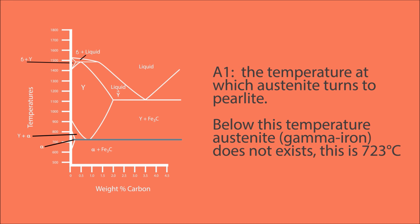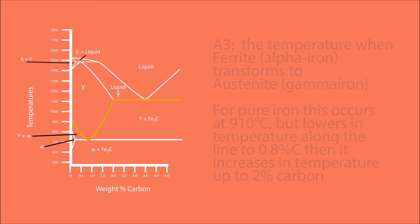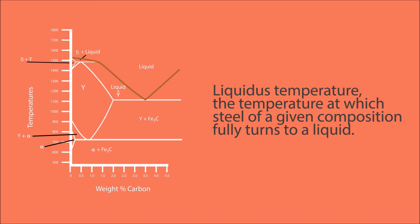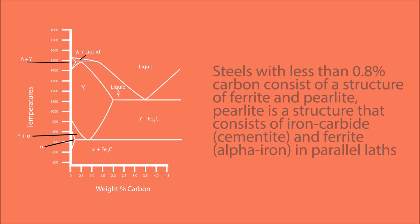On the diagram there are several points of interest. A1 is the temperature at which austenite turns to pearlite; below this temperature austenite (gamma iron) does not exist — this is 723°C. A3 is the temperature when ferrite (alpha iron) transforms to austenite (gamma iron); for pure iron this occurs at 910°C, but lowers along the line to 0.8 percent carbon, then increases in temperature up to two percent carbon. The liquidus temperature is the temperature at which steel of a given composition fully turns to liquid.